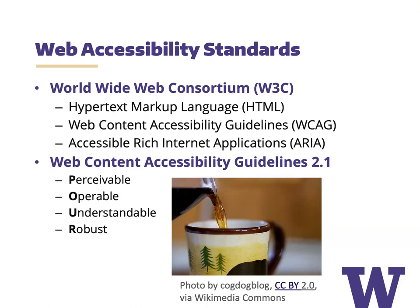In terms of WCAG, the current version is 2.1, broken into four broad concepts. Web content needs to be Perceivable, Operable, Understandable, and Robust. You can remember these with the acronym POUR — P-O-U-R.